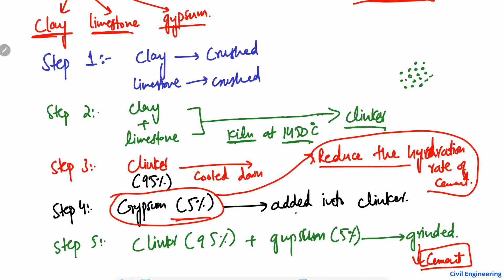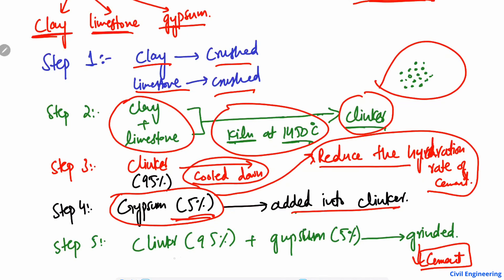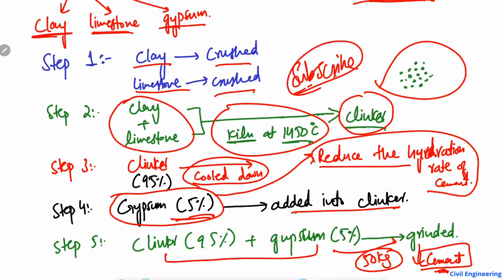To summarize the five basic steps: first, clay and limestone are crushed into small pieces; then they are combined and heated at 1450 degrees centigrade to make clinker, which are small gray balls; the clinker is then cooled down; gypsum is added into the clinker; and finally they are ground together to produce cement powder. This cement is packaged in 50 kg bags and transported to different construction sites. Hope you understand the manufacturing process of cement — don't forget to subscribe for daily civil engineering videos.